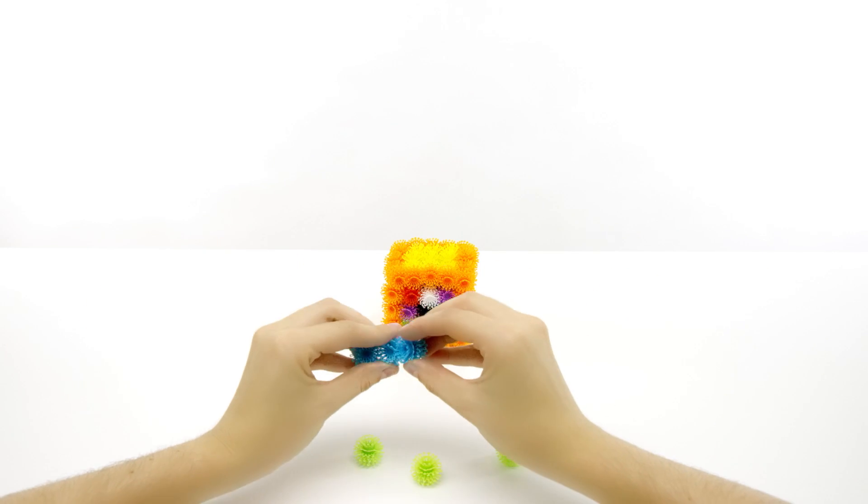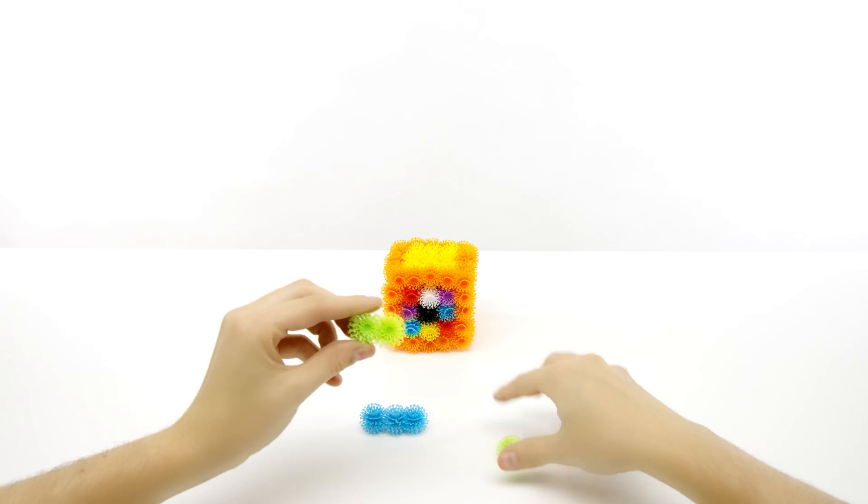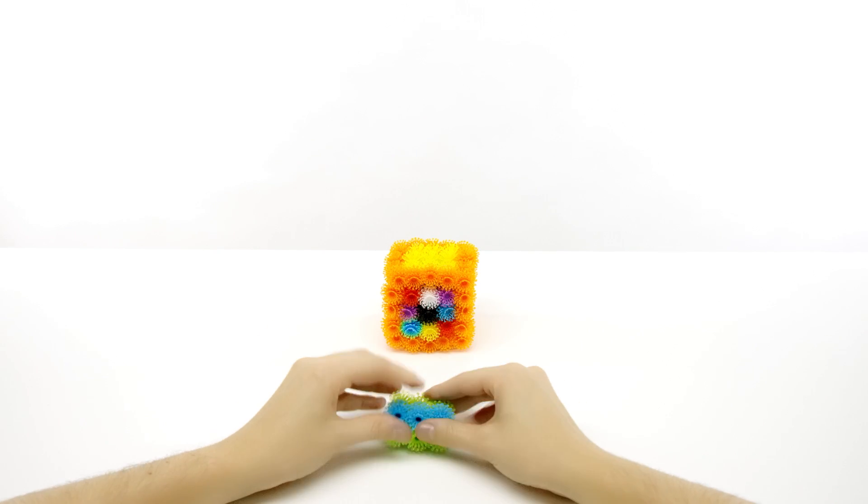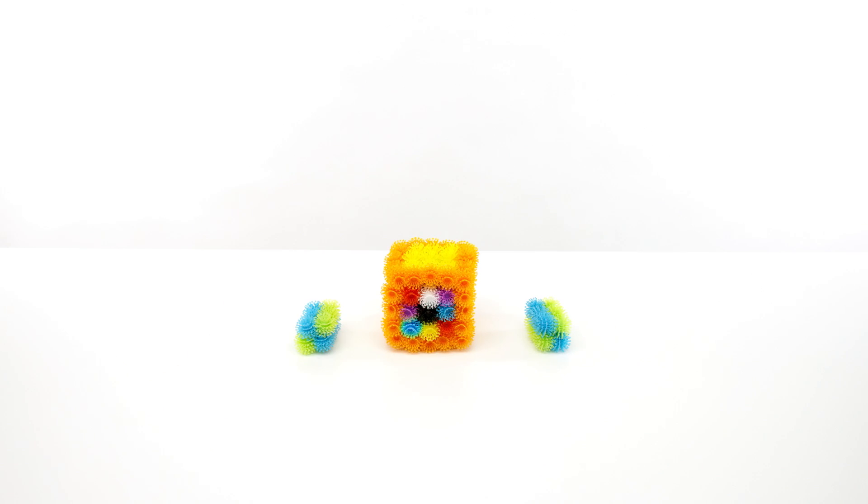To make the arms, connect three blue Bunchems side by side and then three green. Bunch them together. Make another and stack with opposite colors. Make another arm.